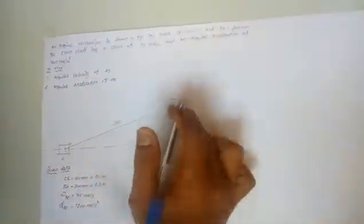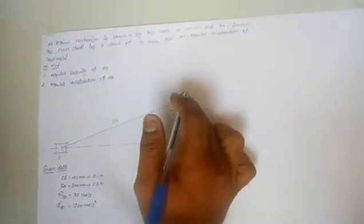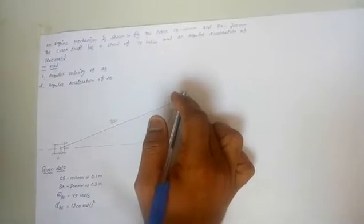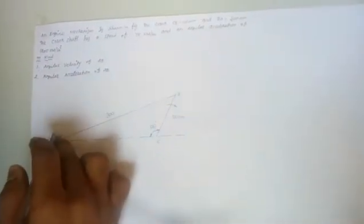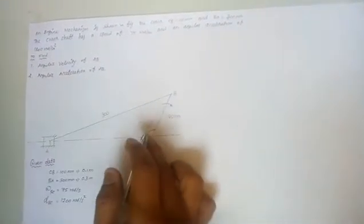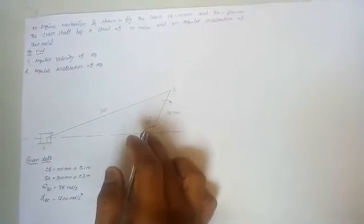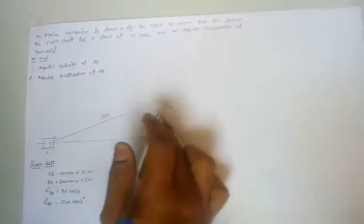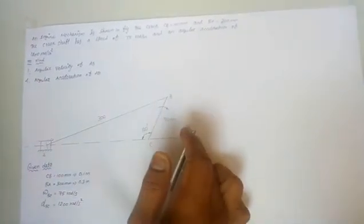The crank CB is 100 mm, BA is equal to 300 mm. The crank shaft has a speed of 75 radians per second and the angular acceleration of link CB is equal to 1200 rpm.